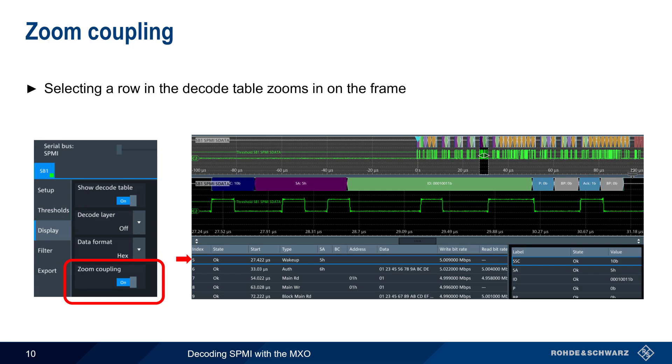The zoomed view shows the Sdata signal in green, as well as the individual SPMI fields such as the sequence start condition, sub-address, ID, parity bit, etc.